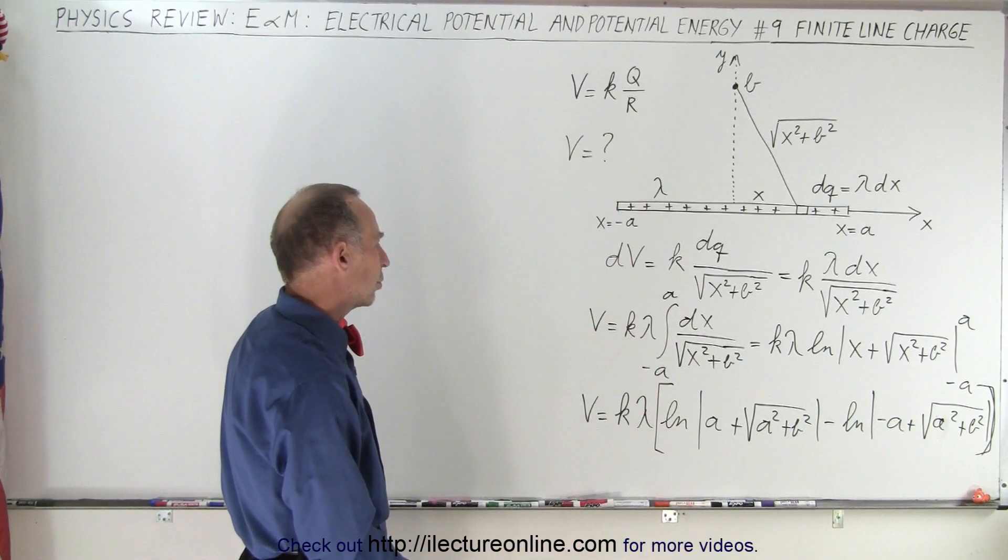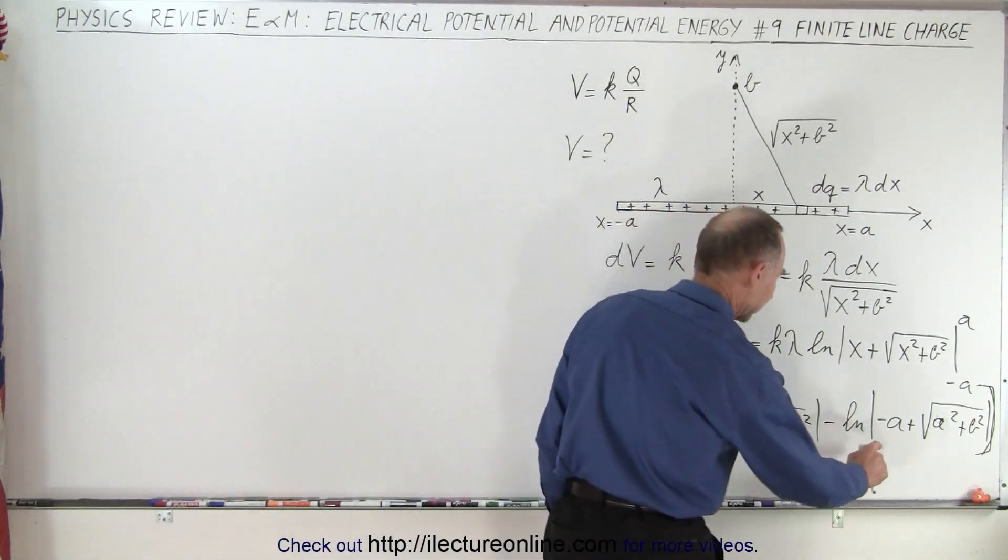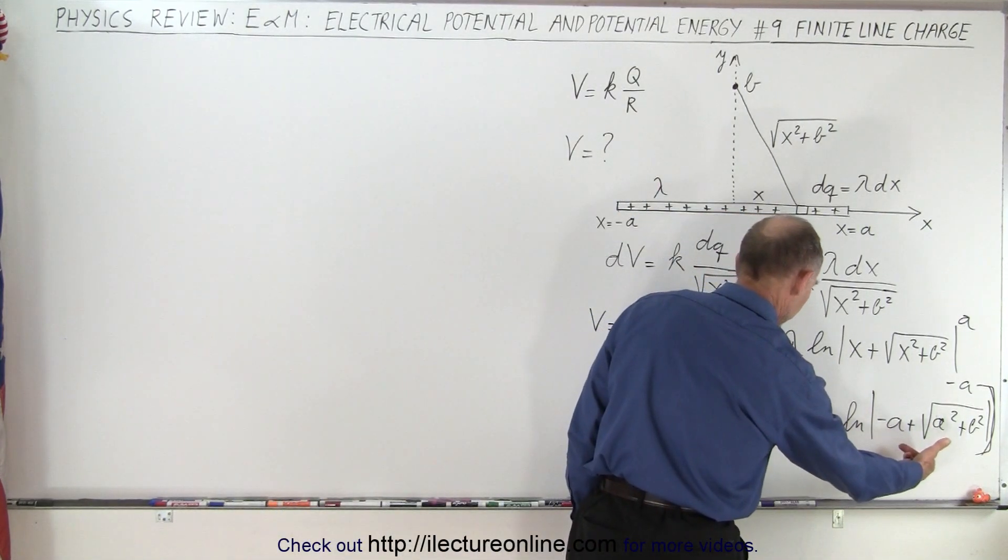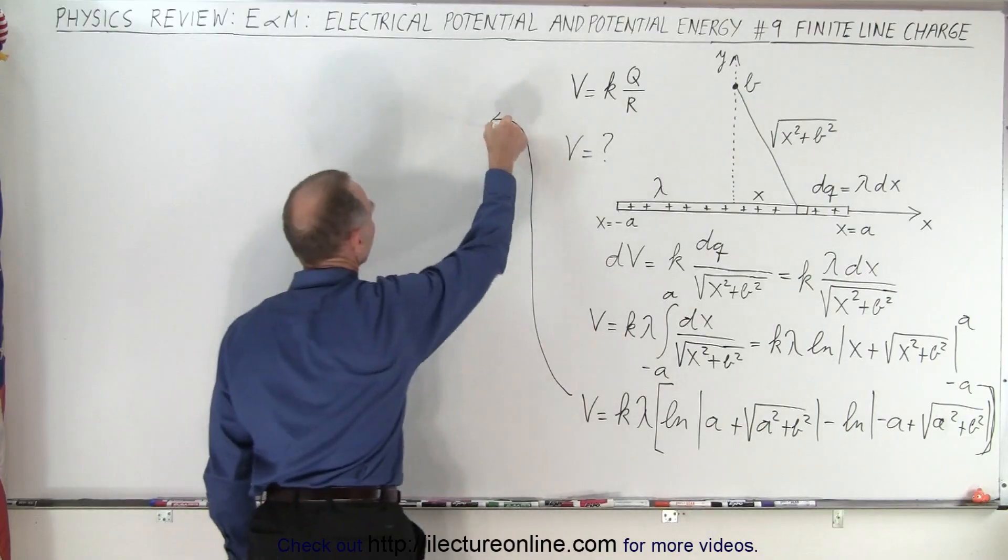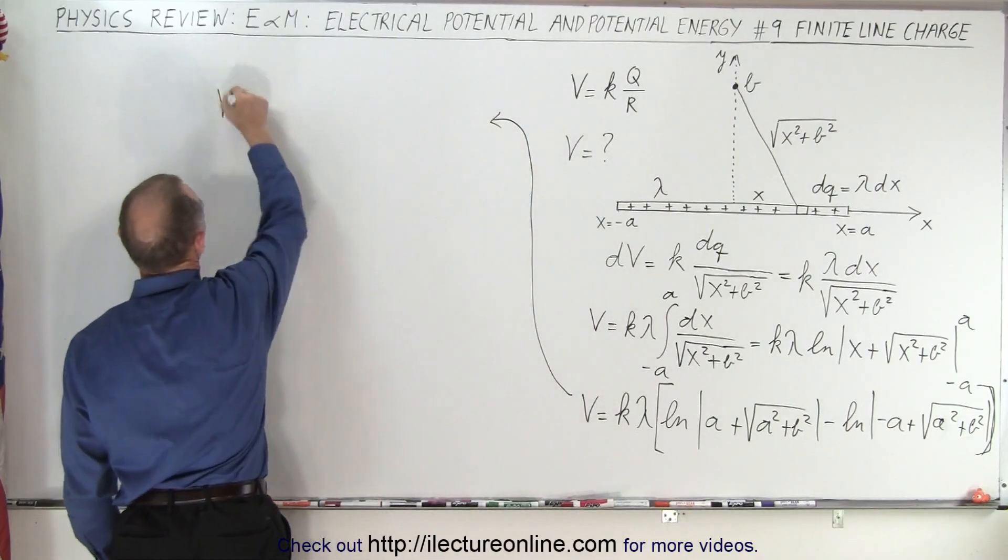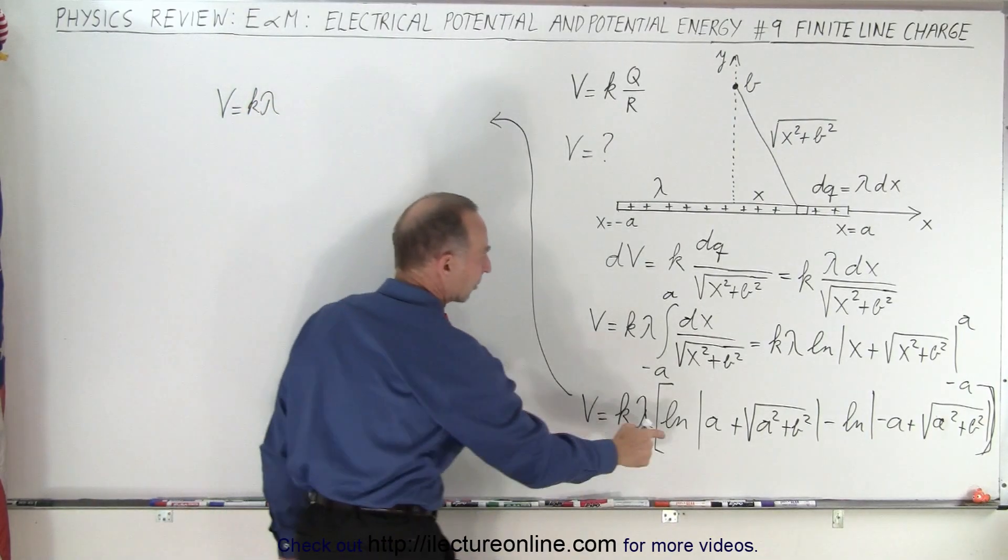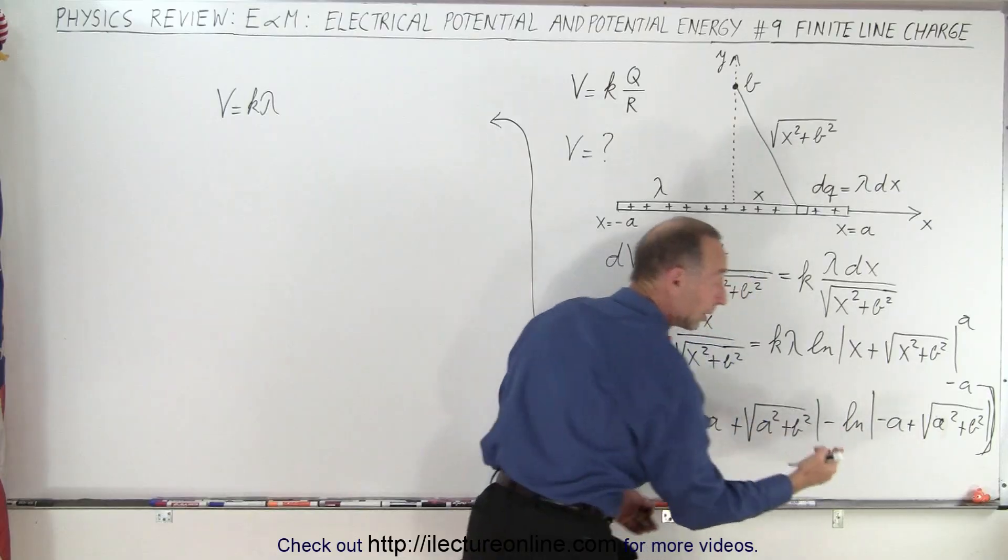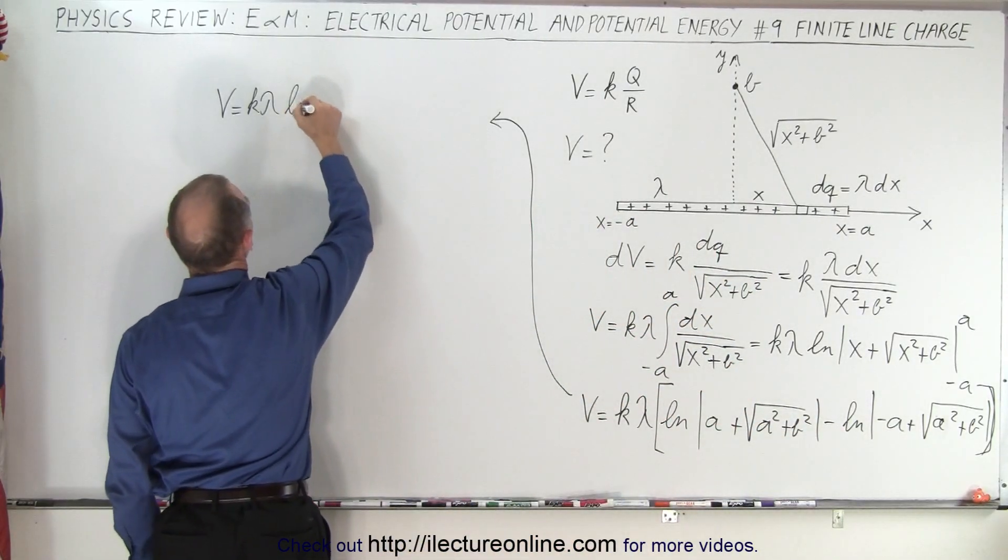So now what we should do is probably simplify that a little bit. Also realizing that I can switch those around. So let me rewrite that a little bit in a little better format. So now we have the voltage is equal to k times lambda, and since we have the natural log of this minus the natural log of that, we can write it as a fraction. So that means that we can write this as a natural log of...